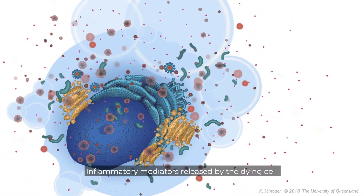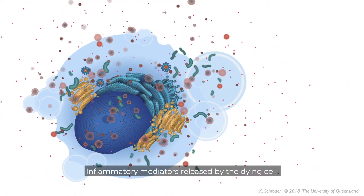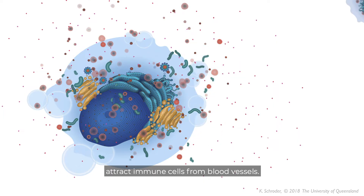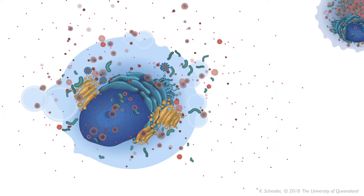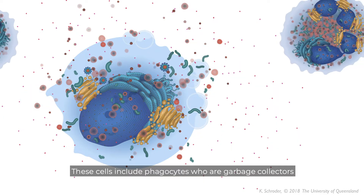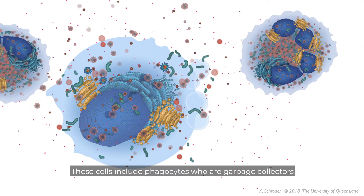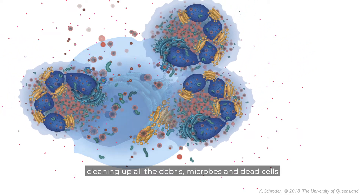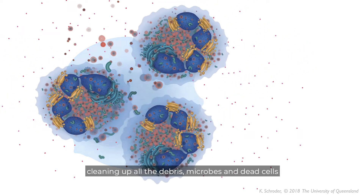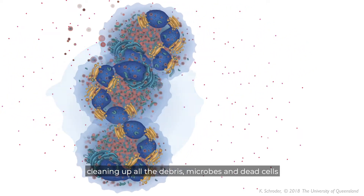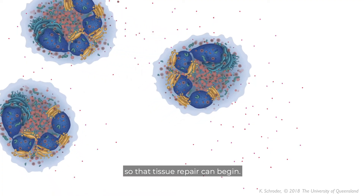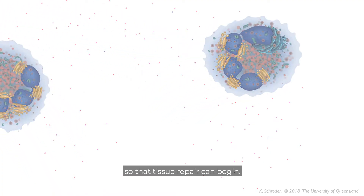Inflammatory mediators released by the dying cell attract immune cells from blood vessels. These cells include phagocytes, who are garbage collectors, cleaning up all the debris, microbes and dead cells, so that tissue repair can begin.